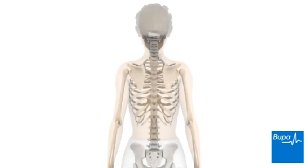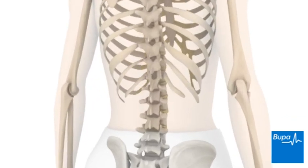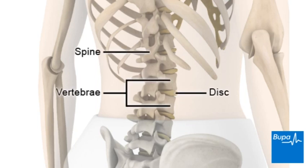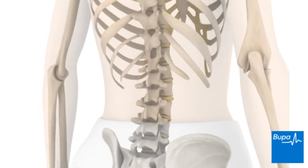Scoliosis is a condition in which the spine curves sideways. Idiopathic scoliosis means that the cause isn't known. The spine is made up of many small bones called vertebrae. These are separated by discs, which allow the spine to bend.